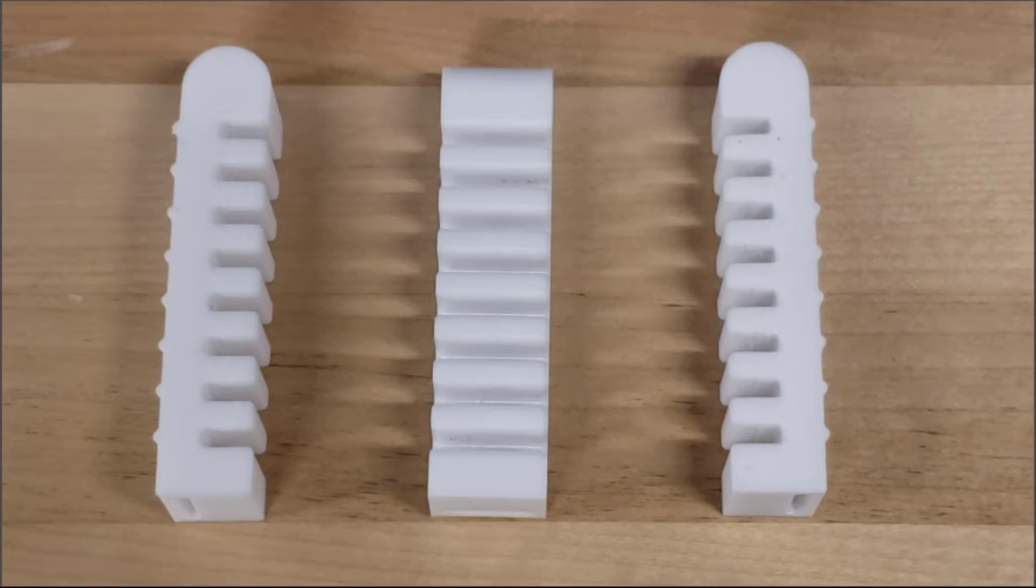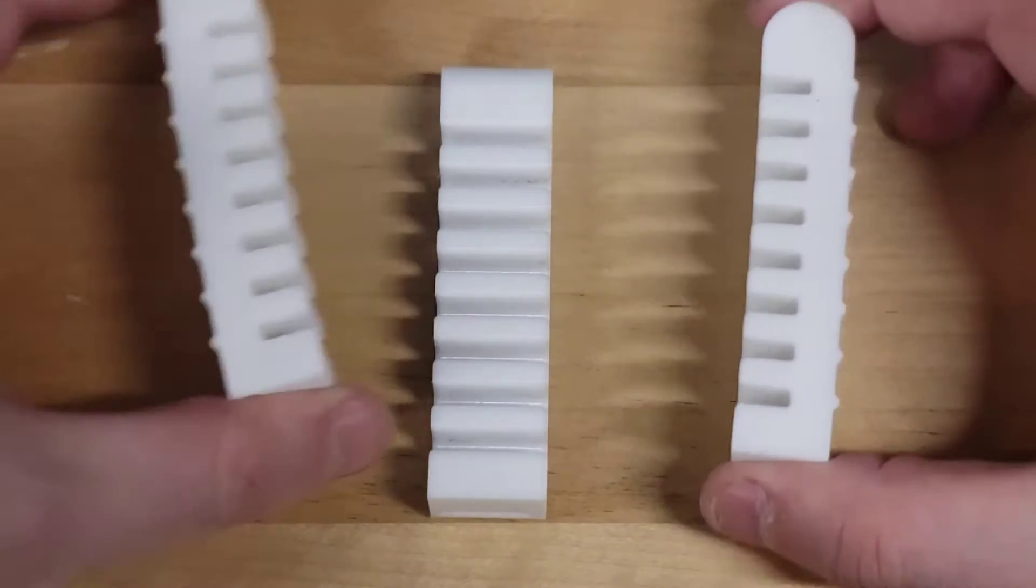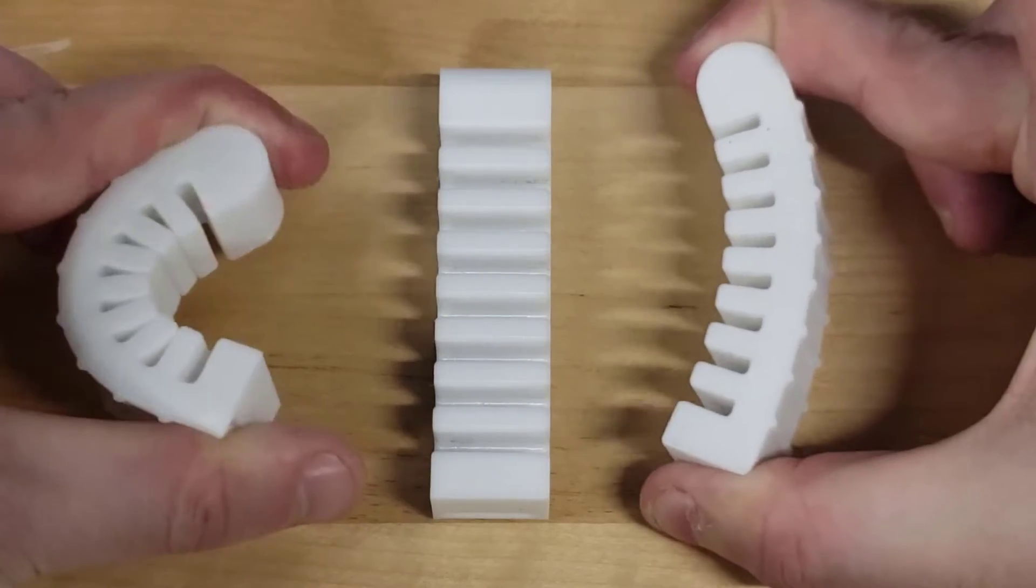To help show off how infill geometries can affect parts, we've printed a few flexible items using Markforged's smooth TPU in white. Now this is just an example material, the same properties do apply to other materials, but TPU is a great way to show off how flexibility changes through infill adjustments.